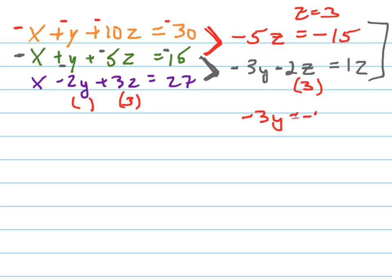I get negative 3y minus 6 equals 12. Add 6 to both sides, 18. Negative 3y. Y equals negative 6.